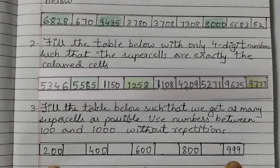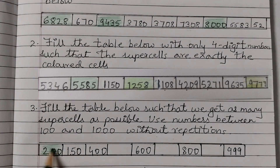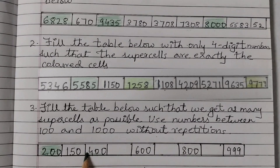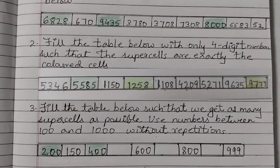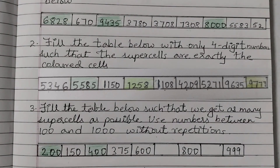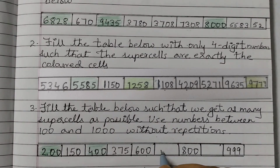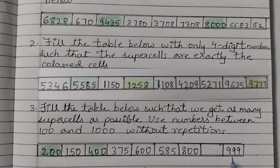I've filled the alternate cells. Now I'll fill the gaps with numbers smaller than both neighbors. Between 200 and 400, write 150 — 150 is smaller than both. Between 400 and 600, write 375. Between 600 and 800, write 585. Between 800 and 999, write 686.